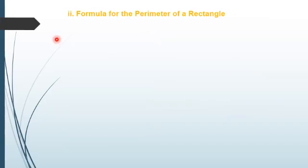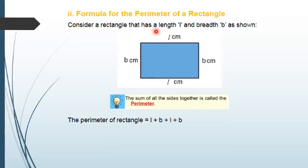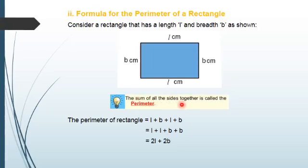Now, formula for the parameter of a rectangle. We will consider a rectangle that has a length L and a breadth B. We know that the sum of all the sides together is called the parameter. So the parameter of the rectangle will be equal to L plus B plus L plus B. We write the similar terms together as L plus L plus B plus B, which equals 2L plus 2B. Since 2 is common in both terms, we take it outside: 2 times (L plus B). So the formula for the parameter of a rectangle is 2(L plus B).